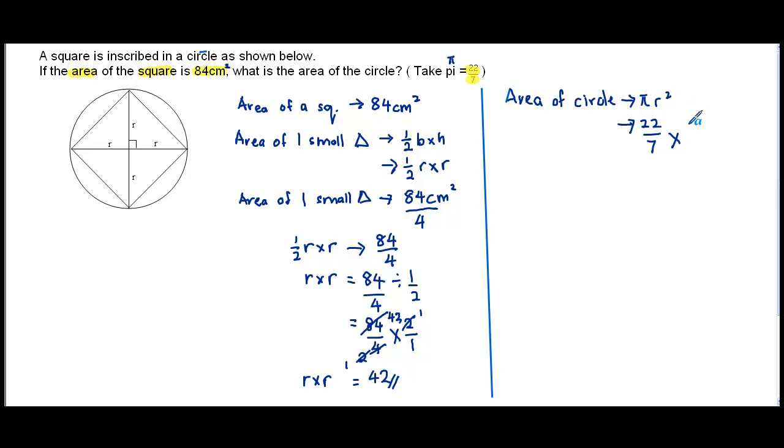22 over 7 times 42. Divide by 7, you get 6. So 22 times 6 would give us 132.